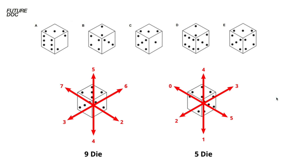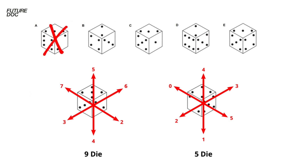The first one we can take straight away, and we know that this isn't going to be right. The reason is because it has a six, so that means it can't be the five die of course. And if you have a six, then the opposing side needs to be a three. We can see the three, so therefore that can't be the opposing side, and that means it has to be incorrect.